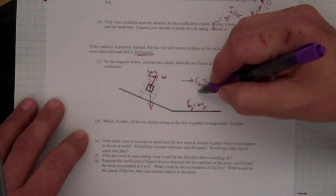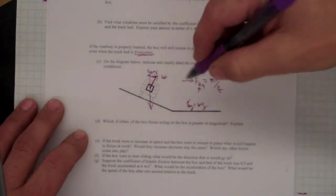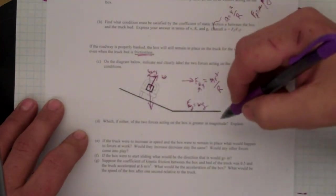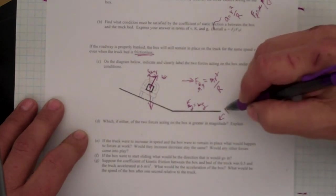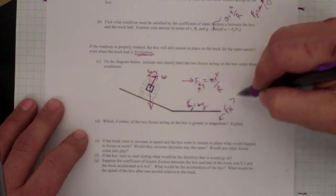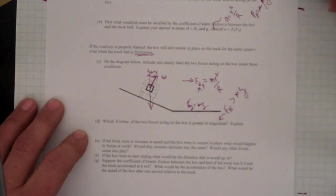And then, because we've got this other force here, which of the two forces acting on the box are greater in magnitude, clearly the Fn force is greater than the Mg force.